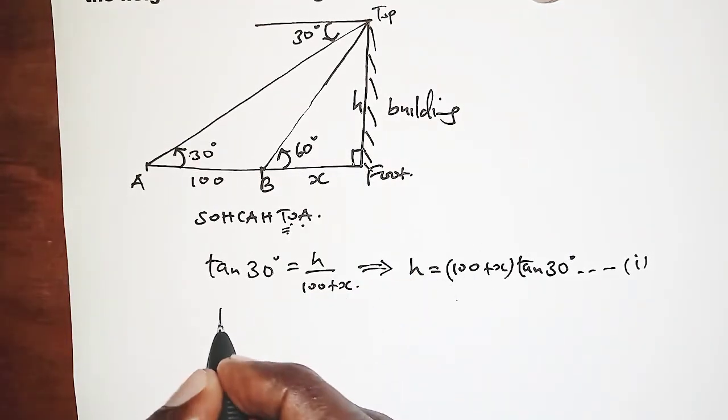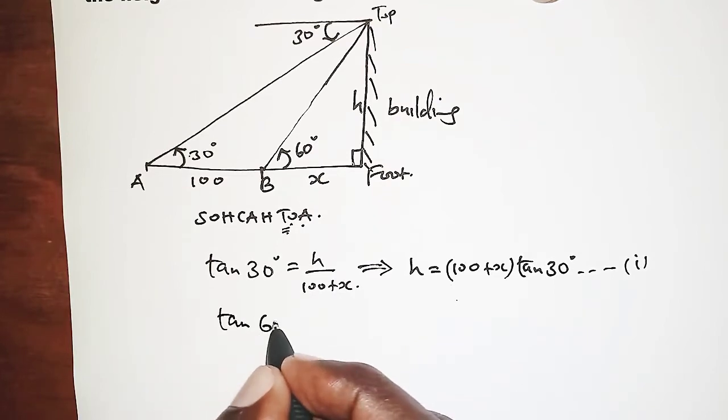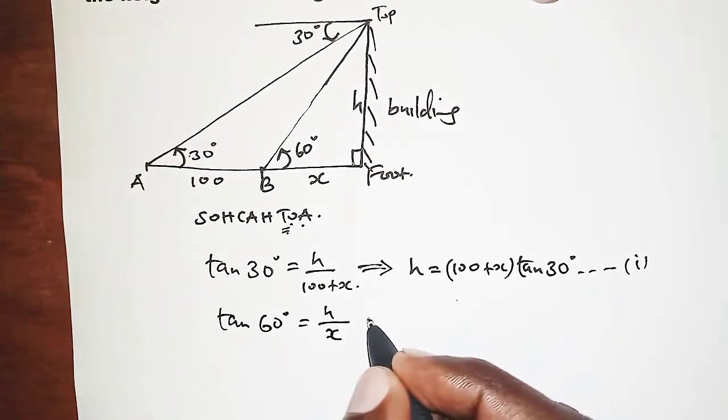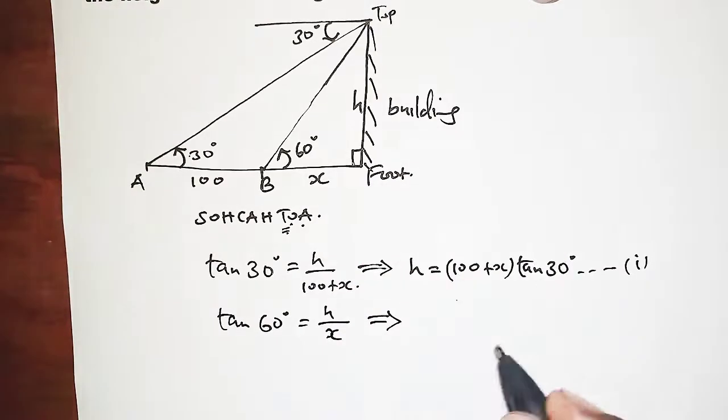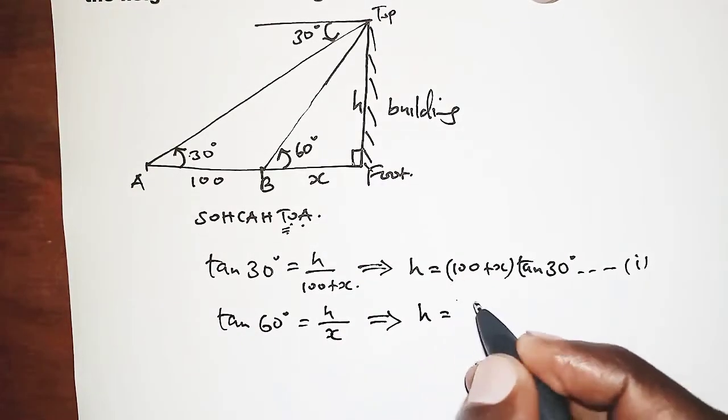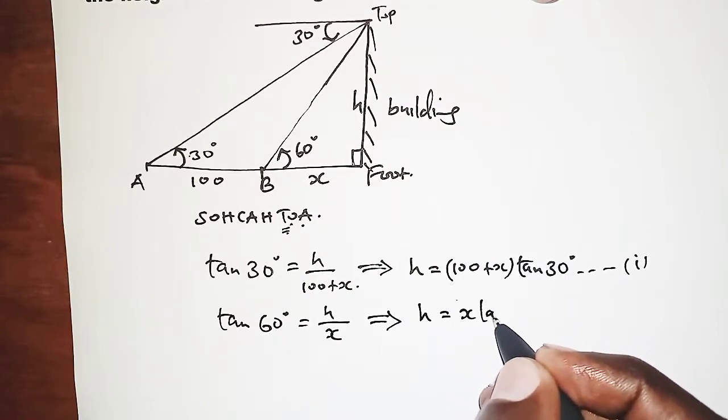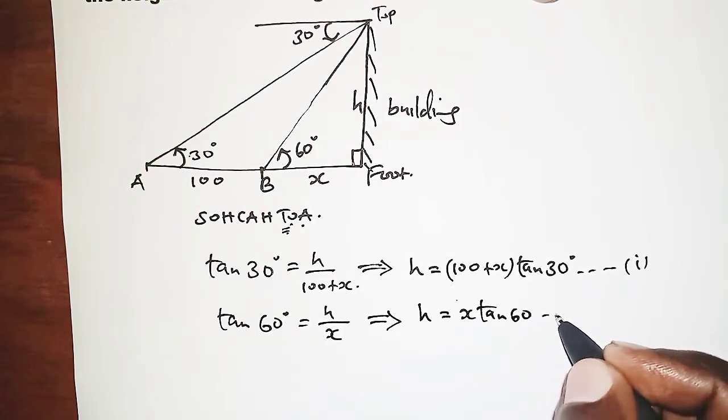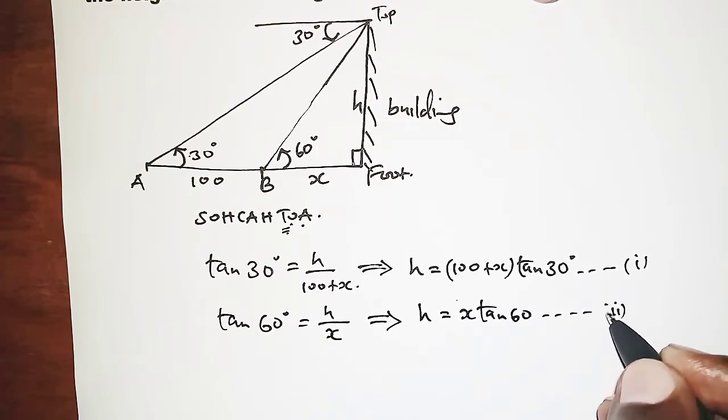Again, we're saying tan 60° should be opposite—that is, the height H—over adjacent X. Making the height the subject, so H equals X tan 60°, again by cross multiplying. So that gives us the second equation.